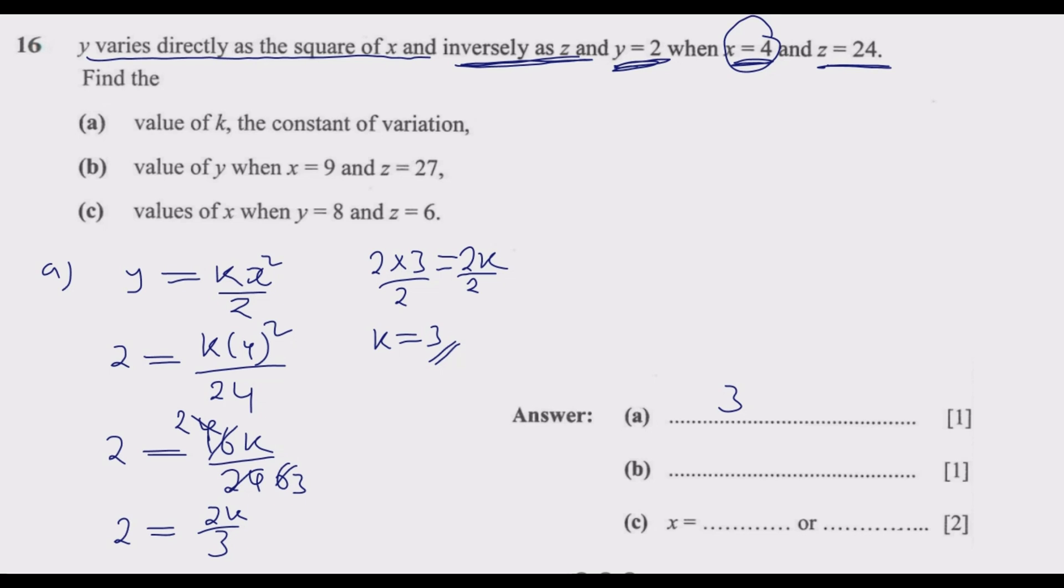We go to question B. Value of Y when X equals 9 and Z equals 27. This is B now. Having found what K is, then the formula becomes much easier. So we are saying Y equals 3X squared over Z. Now we are told that X equals 9, then Z equals 27.